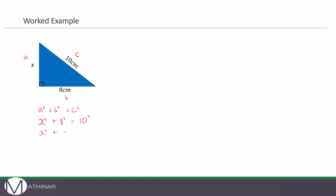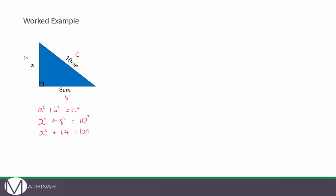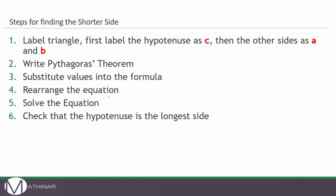We know what 8 squared and 10 squared are. 8 squared is 64 and 10 squared is 100. Step four is to rearrange the equation — we want to make X squared the subject. We need to take the plus 64 across to the other side, so X squared equals 100 minus 64, which is 36. X squared is 36, which means X equals the square root of 36, and the square root of 36 is 6 centimetres.